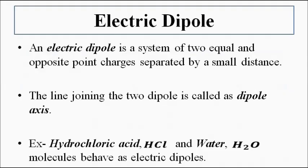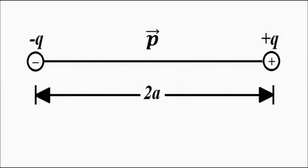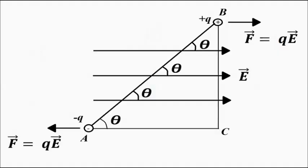The electric dipole, as we all know, is a system of two equal and opposite charges — equal magnitude but opposite sign — separated by a certain distance. Let us say this electric dipole is placed in a uniform electric field at a certain angle, such that the length of the dipole makes a certain angle theta with the electric field lines.